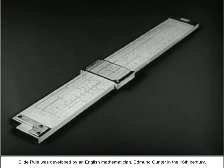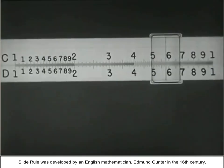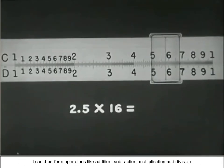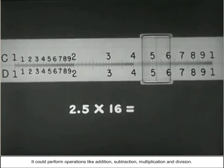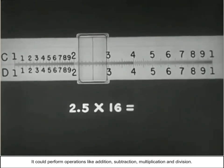Slide rule was developed by an English mathematician, Edmund Gunter, in the 16th century. It could perform operations like addition, subtraction, multiplication and division.